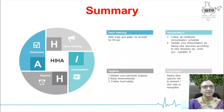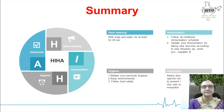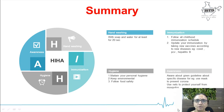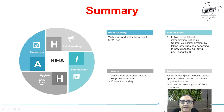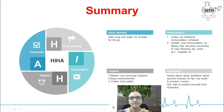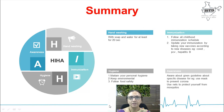In summary, I can say: HI-HA. H is for hand washing with soap and water for at least 20 seconds. I is for immunization — follow all childhood immunization schedules and update your immunization by taking new vaccines according to new diseases such as COVID, pneumococcal vaccine, and hepatitis B.